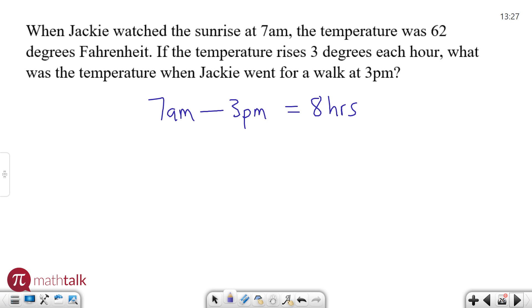And if the temperature is rising 3 degrees every hour, then I know that I have 8 times 3 to figure out the total number of degrees it went up, which is 24 degrees. So if it started at 62 degrees at 7 a.m. and it's gone up by 24 degrees, then 62 plus 24 is a nice hot 86 degrees outside for her 3 p.m. walk.